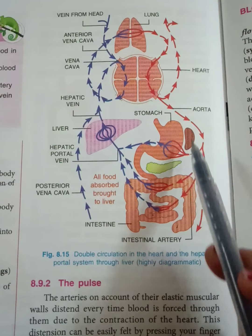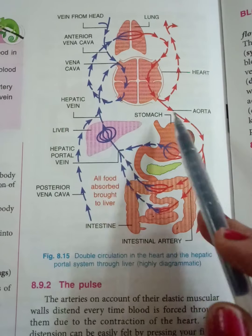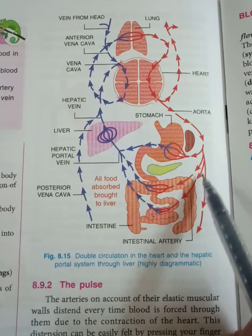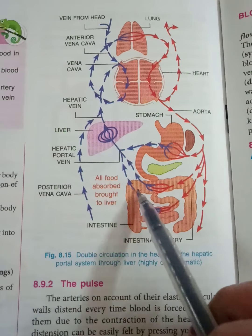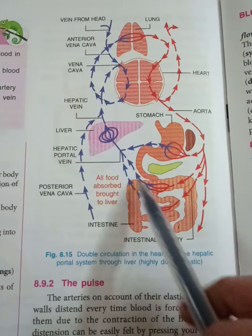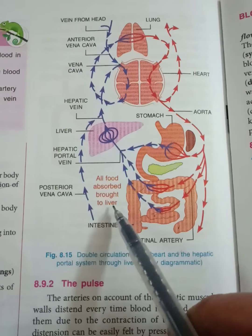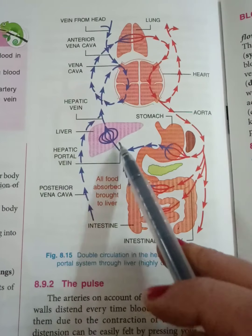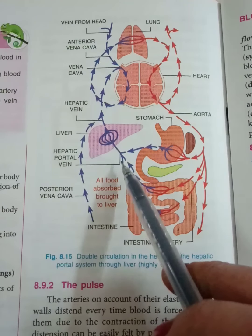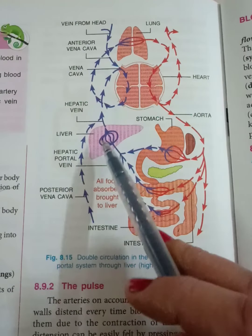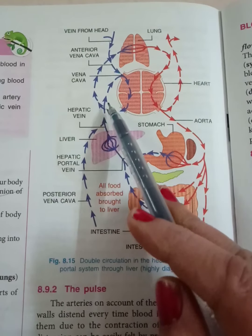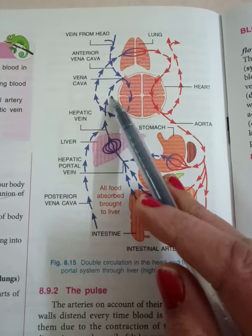Food is digested in the small intestine. Oxygenated blood enters these organs, and then all the food absorbed is brought to the liver. That transport is through the hepatic portal vein, and from the liver, through the hepatic vein, it is collected and poured into the inferior vena cava.